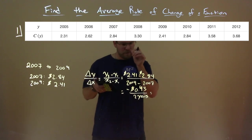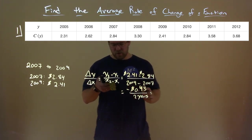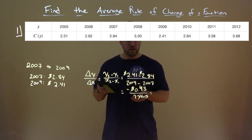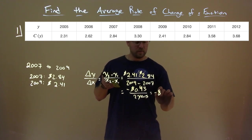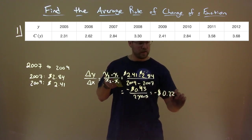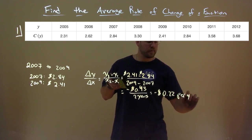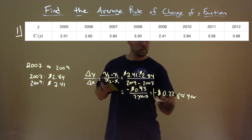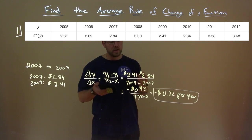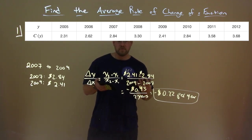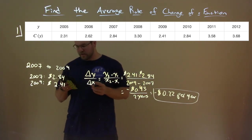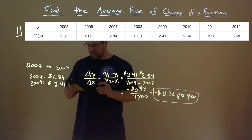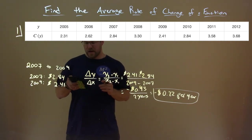So 0.43 divided by 2 gives us negative $0.22, or 22 cents per year. Between 2007 and 2009, our average rate of change was negative 22 cents per year for the gallon of gas. Let's dive into another example.